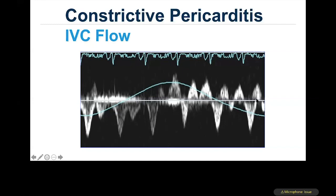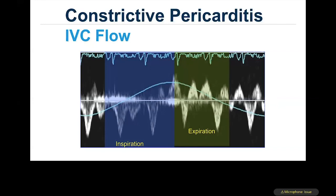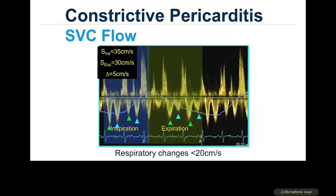The expiratory reversal occurs because during expiration, the right ventricle is not taking in further flow and flow reverses in the IVC, which is usually engorged and very plethoric. Appearance of flow reversals in diastole during expiration — plus a plethoric IVC with exaggerated hepatic vein expiratory flow reversals — allows diagnosis consistent with constrictive pericarditis physiology.